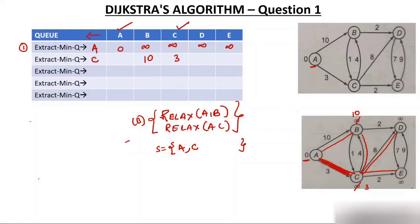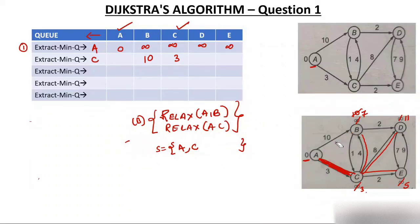Now relax the edges from C. C's weight is 3. 3+2=5 for node E, which is less than infinity, so E becomes 5. 3+8=11 for node D, which is less than infinity, so D becomes 11. 3+4=7 for node B, which is less than 10, so B becomes 7. Since C gave a better path to B, the double line from A to B is removed and replaced with C to B.